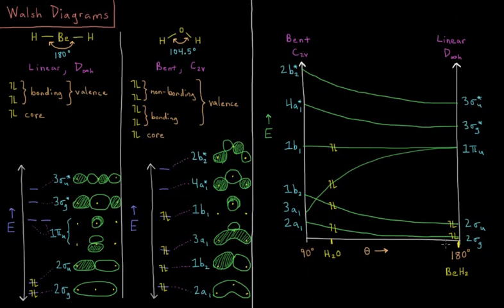For BeH2, there are only two of these that are occupied orbitals, so they are lowest in energy at 180 degrees here, so it makes most sense for the molecule to be lowest in energy when the bond angle is 180 degrees. So that makes sense from our Walsh diagram here.